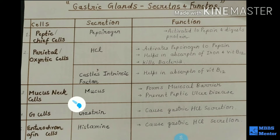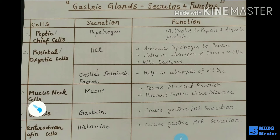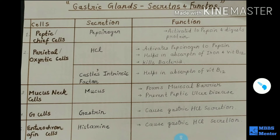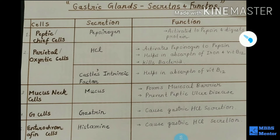Number three is the mucus neck cells. They secrete mucus. Mucus neck cells secrete mucus, which forms a mucosal barrier and prevents peptic ulcer disease. In the stomach there is a pepsin enzyme, and pepsin is a protein-digesting enzyme.